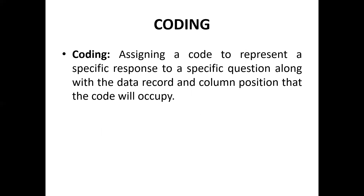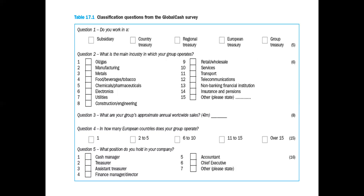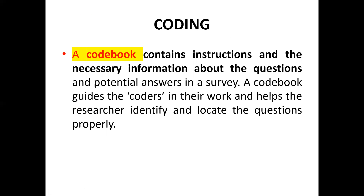Coding means assigning a code to represent a specific response to a specific question, along with the data record and column position that the code will occupy. A code book contains instructions and necessary information about the questions and potential answers in a survey. A code book guides the coders in their work and helps researchers identify and locate questions properly. You need to have a code book ready before you collect data through questionnaires.